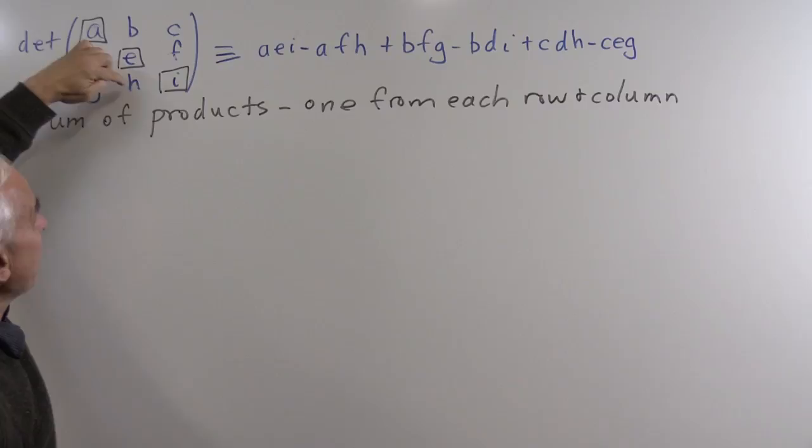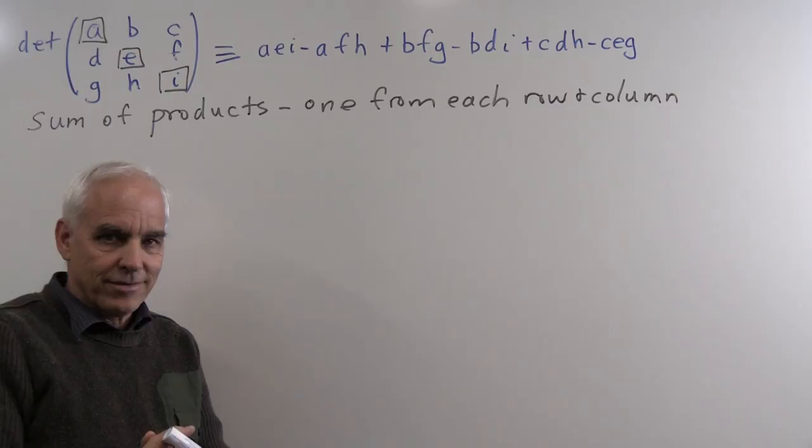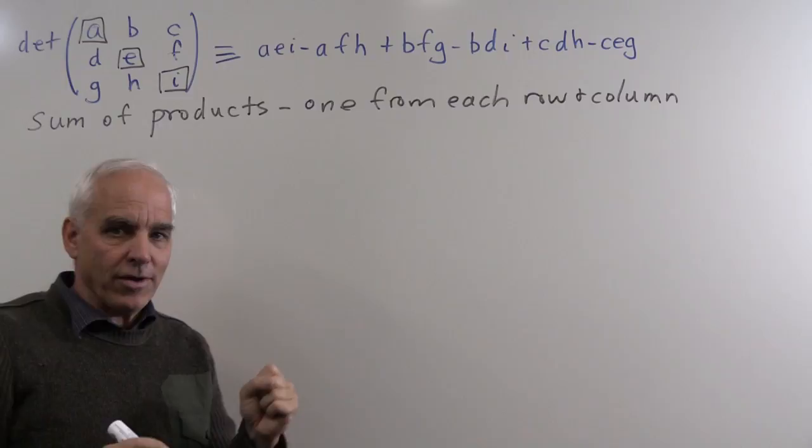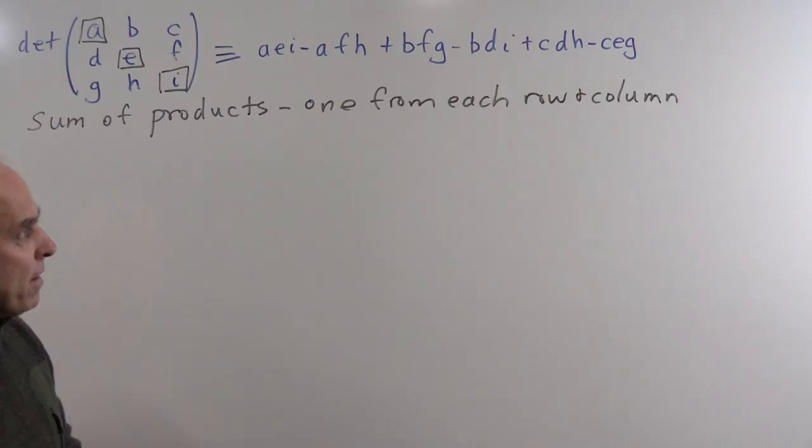These six arrangements correspond to the six possible ways of placing three rooks on a three by three chessboard so that none can take each other. In general, for an n by n chessboard, there are n factorial such ways of arranging n rooks, and each of those n factorial positions will correspond to an entry in the determinant sum. But there is another important ingredient in this definition: the plus and minus signs.